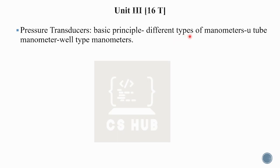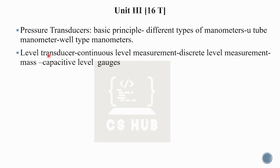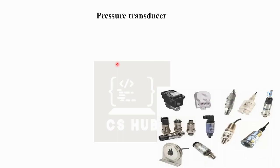This covers the concept of the manometer and different types of manometer, including the U-tube manometer and well-type manometer. We will also look at the level transducer, which includes continuous level measurement, discrete level measurement, and mass capacity level gauges. This is the case of the manometer and the pressure transducer.